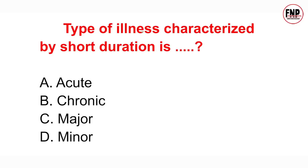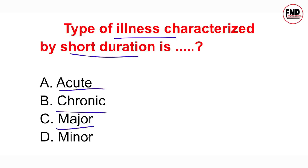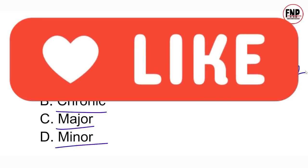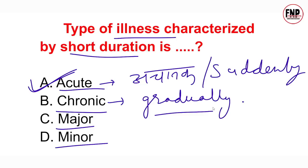Next question: Type of illness characterized by short duration is — acute, chronic, major, or minor? Option A is absolutely correct. Acute shabd se aap achanak yaad rakh sakte hain — yaani aisi disease jo achanak develop ho jaati hai use acute disease kehte hain. Aur aisi disease jo gradually develop hoti hai, dhire dhire, use chronic disease kehte hain.